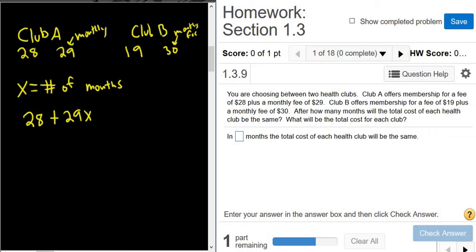So if it was one month, it'd be 28 plus 29 times 1. If it was two months, it would be 28 plus 29 times 2. But it's x months, so it's 28 plus 29x. And that's equal to the total cost for Club B. Now B had a membership fee of $19 plus $30 per month.